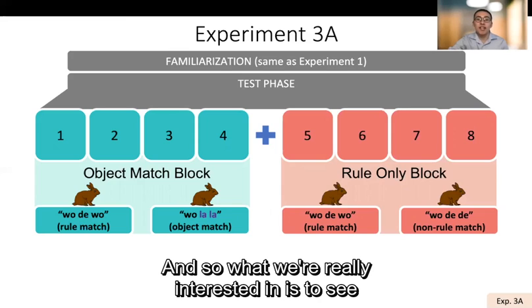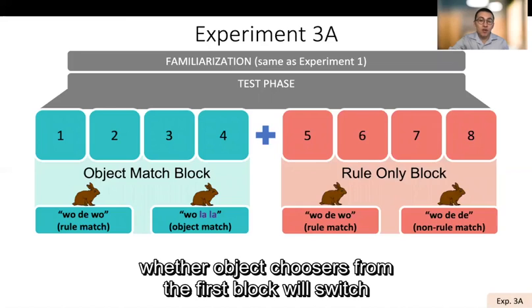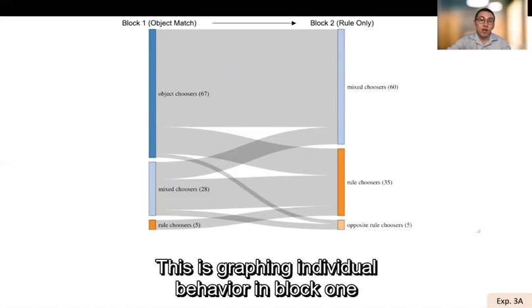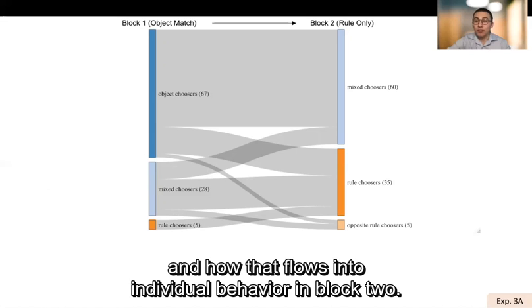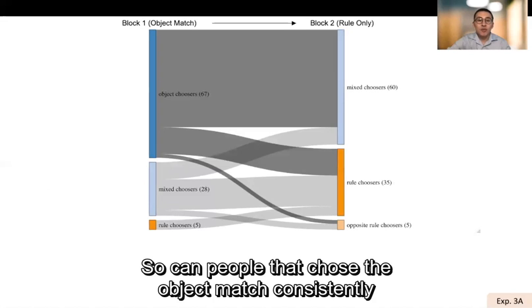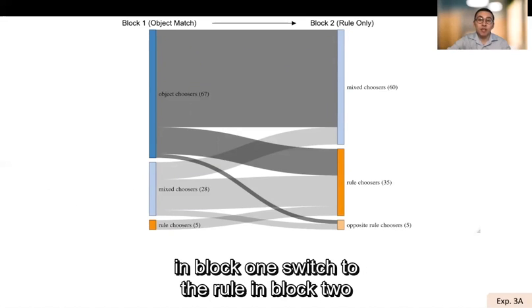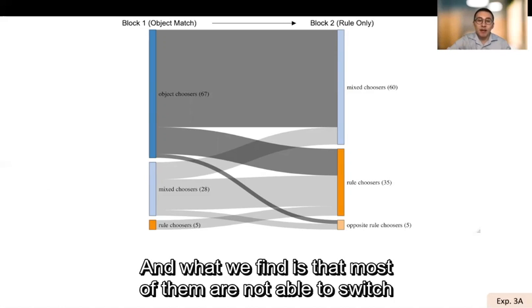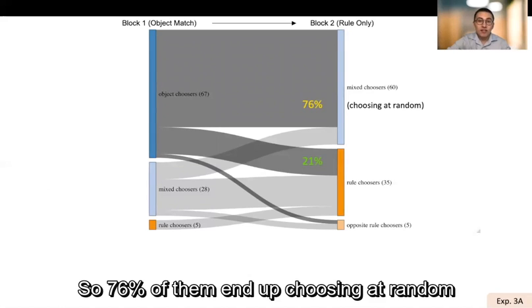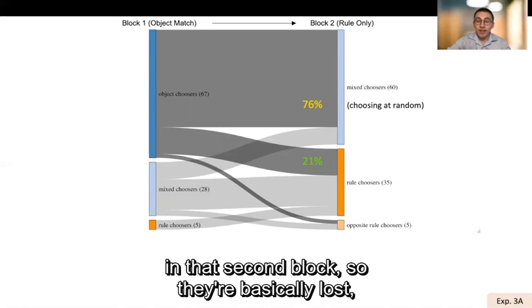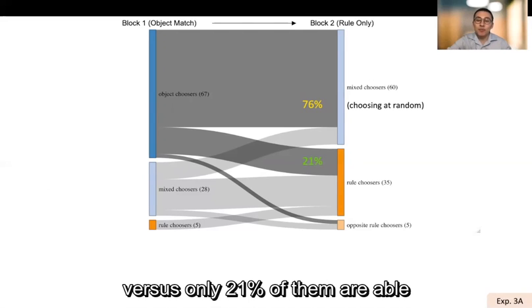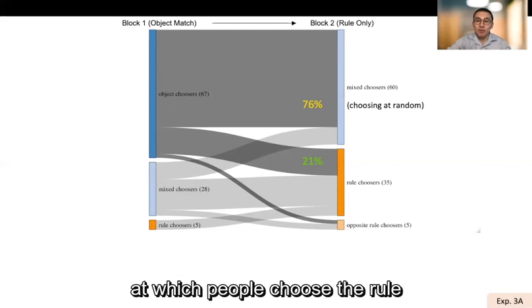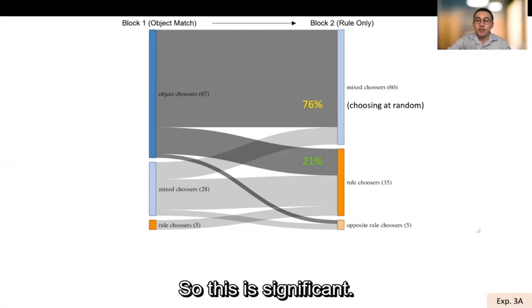So here are our results. This is graphing individual behavior in block one and how that flows into individual behavior in block two. And we're focusing on the object choosers. So can people that chose the object match consistently in block one switch to the rule in block two when it's only the rule versus a non-rule. And what we find is that most of them are not able to switch to that rule. So 76% of them end up choosing at random in that second block, so they're basically lost, versus only 21% of them are able to consistently choose that rule. And remember that is much lower than the rate at which people choose the rule in just control conditions without this block format. So this is significant.